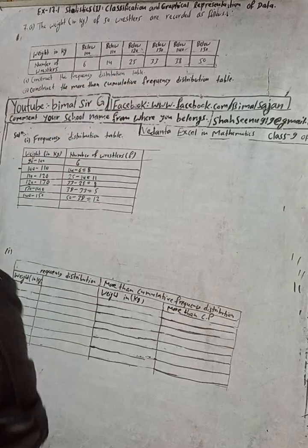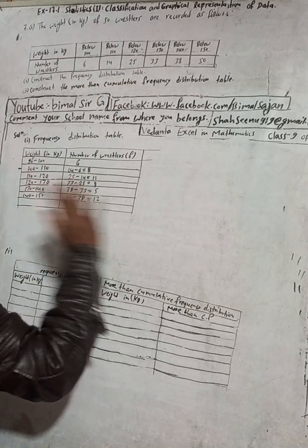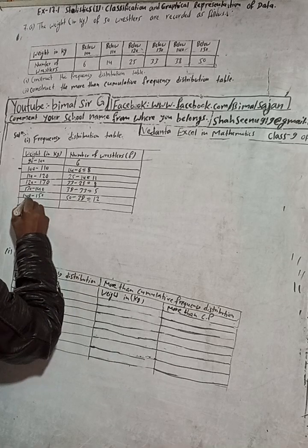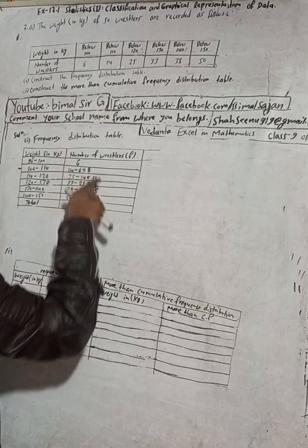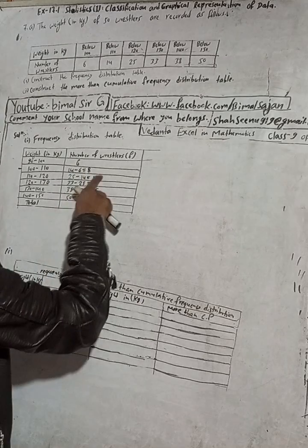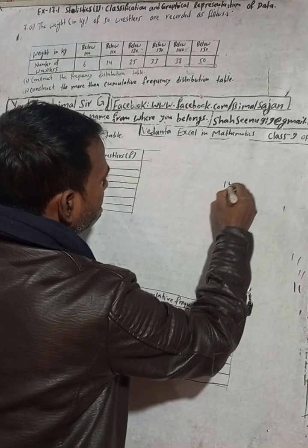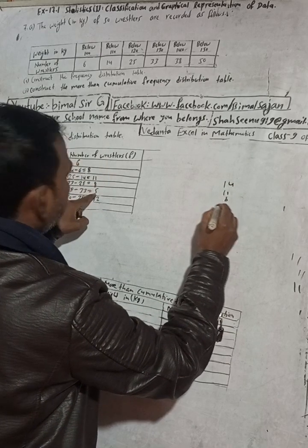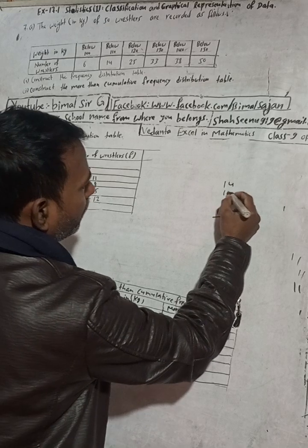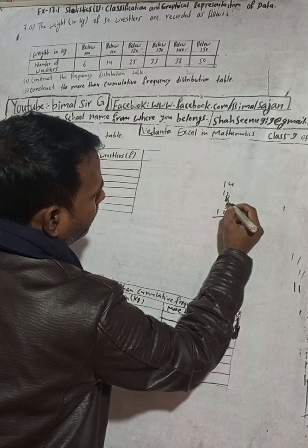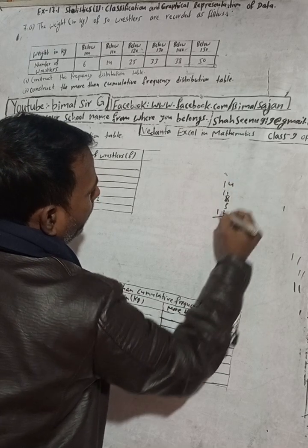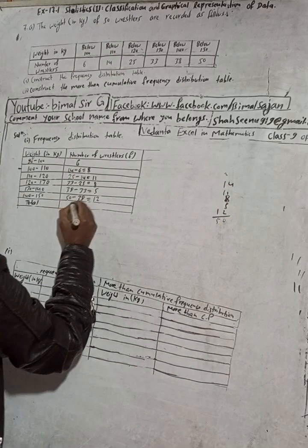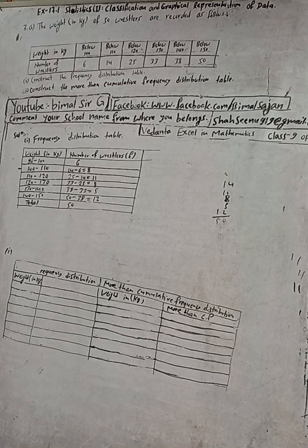This completes the frequency distribution table — that is the solution to number 1. You can write a total row: 6 plus 8 is 14, plus 11 is 25, plus 8 is 33, plus 5 is 38, plus 12 is 50. So the total is 50, confirming all 50 wrestlers are accounted for. Number 1 is complete.